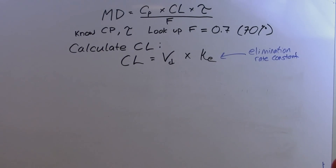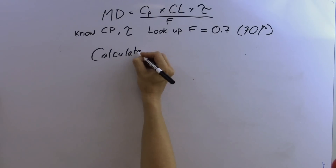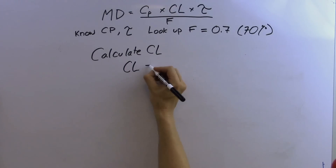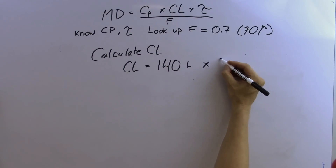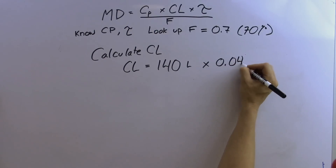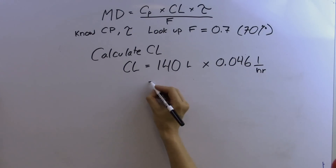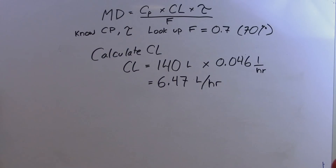Plugging into our clearance equation with a volume of distribution of 140 liters and an elimination rate constant of 0.046 per hour, we get a clearance of 6.47 liters per hour in this man.